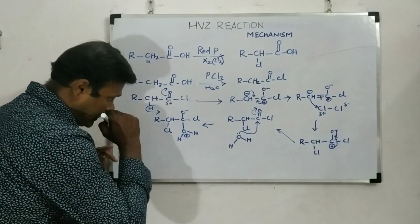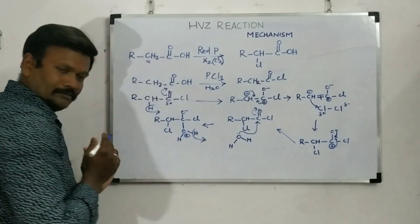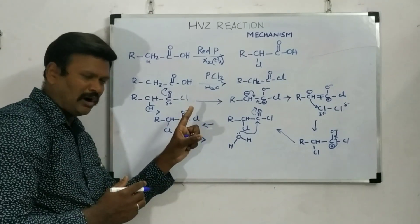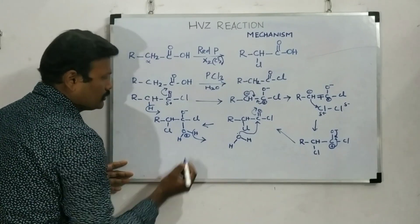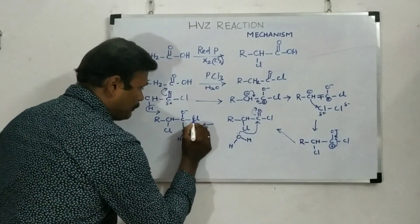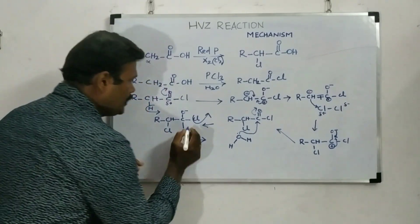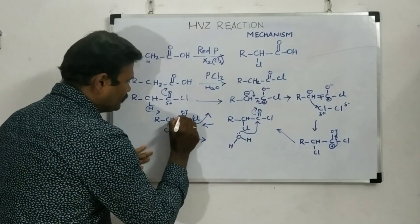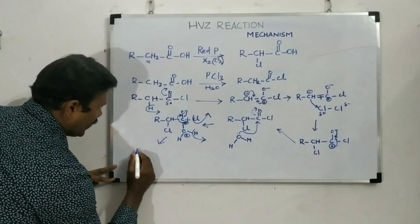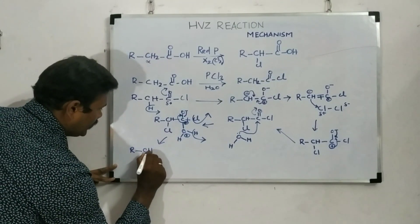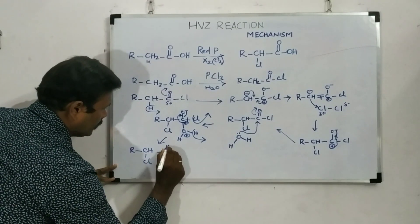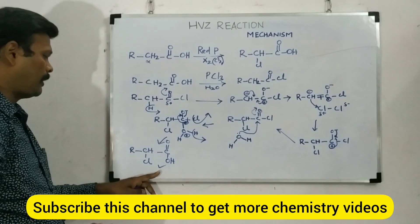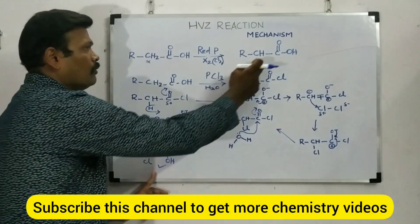To neutralize that positive charge, H⁺ leaves on its own. Additionally, Cl⁻ is a good leaving group and also departs. When the Cl-C bond breaks, it gives the carbon a positive charge, which is then neutralized as the negative charge forms a double bond. The final product obtained is RCHCl-COOH — an alpha-halo carboxylic acid. This is the ultimate product of the HVZ reaction.